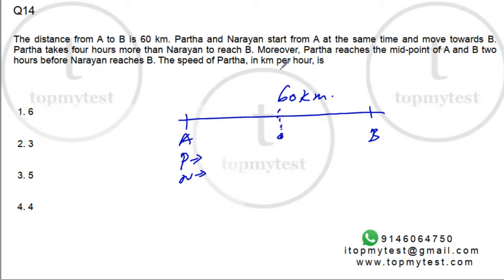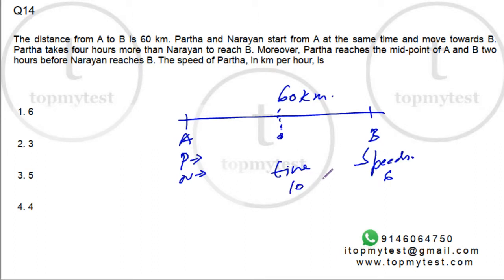He reaches the midpoint two hours before Narayan reaches B, so we have two conditions to work with. Let's look at speeds and timings. If Partha's speed is 6, his time will be 10 hours, so Narayan will take 10 minus 4 which is 6 hours, giving Narayan a speed of 10.